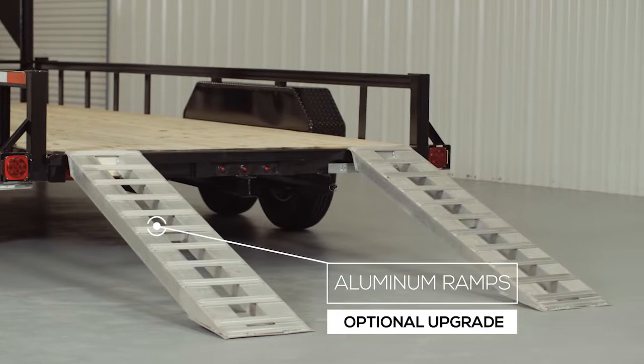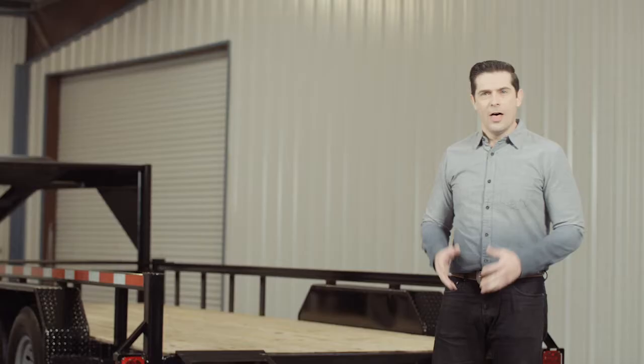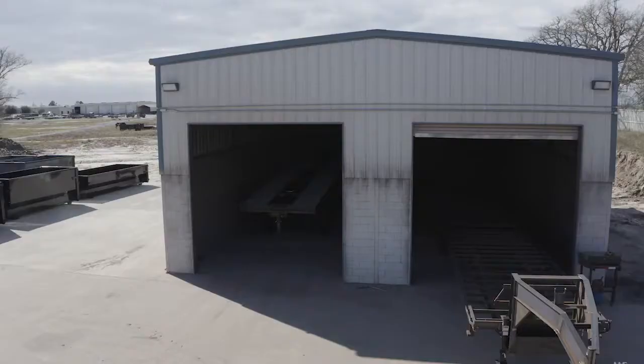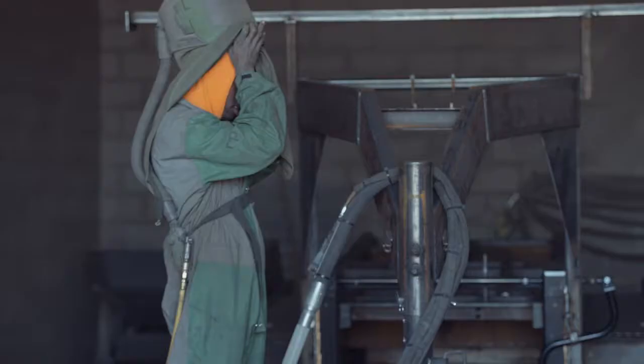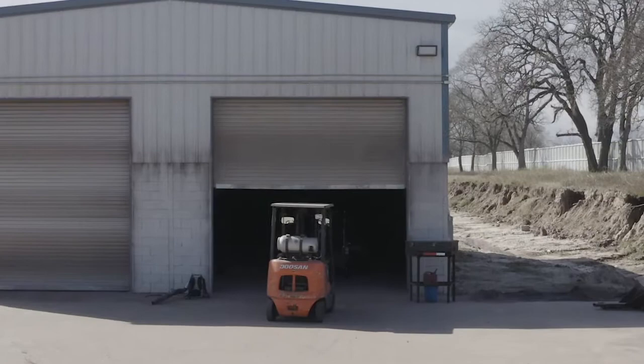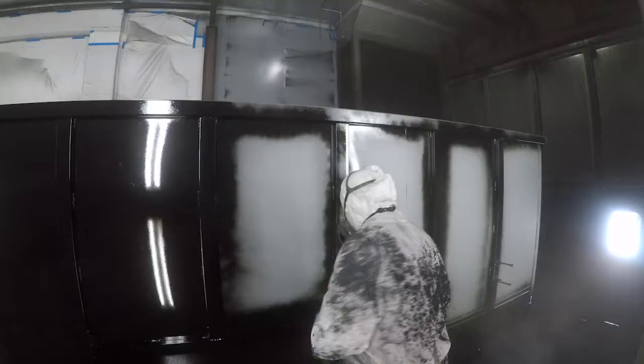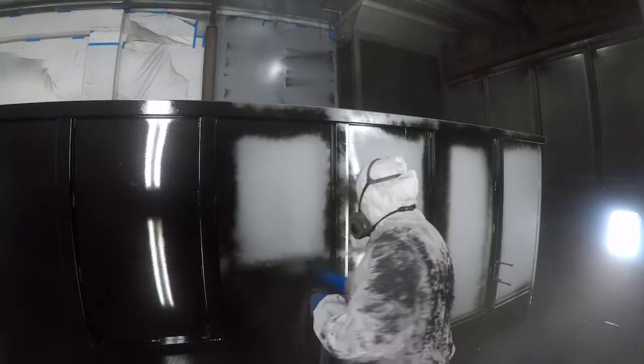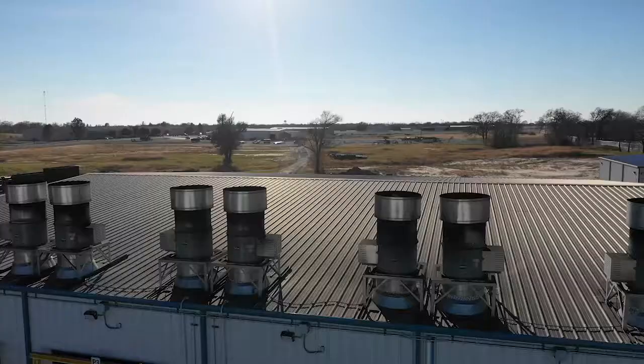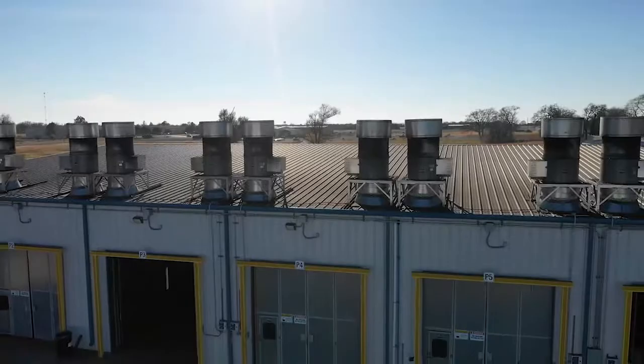The paint and finish on the trailer are nothing less than top notch. The process starts with a full media blasting to remove any surface rust or scale. Then each trailer is fully primed top to bottom in preparation for the two top coats of automotive grade acrylic enamel paint. All of which is done in our new state of the art paint facility. This ensures that you have a protective, durable, and shiny finish for years to come.